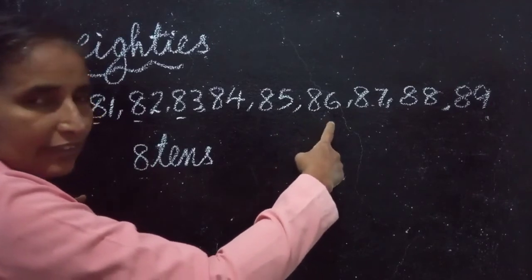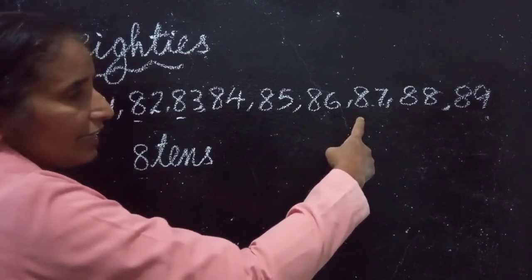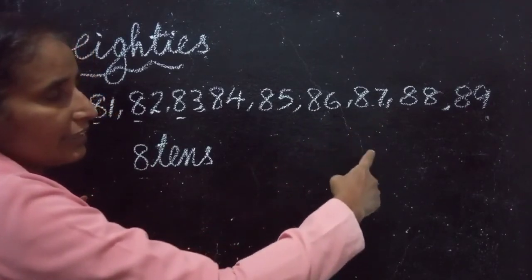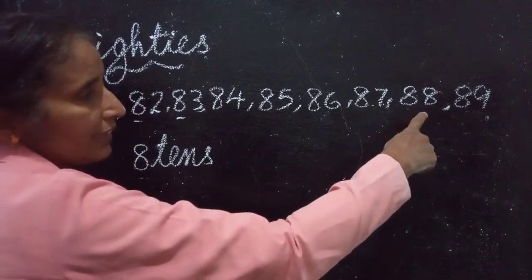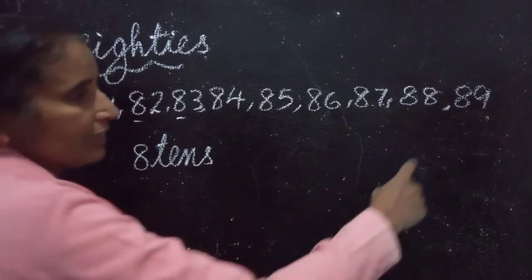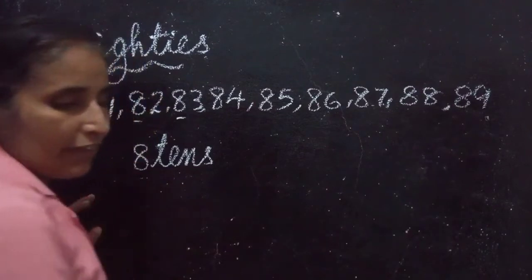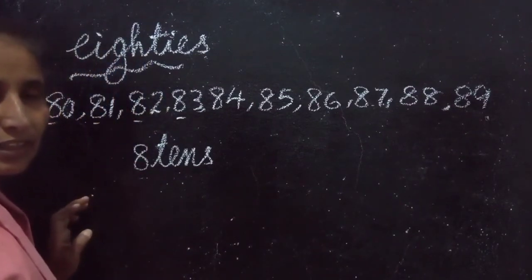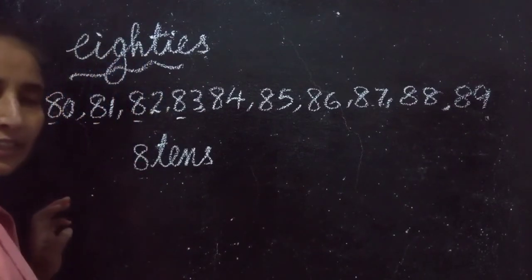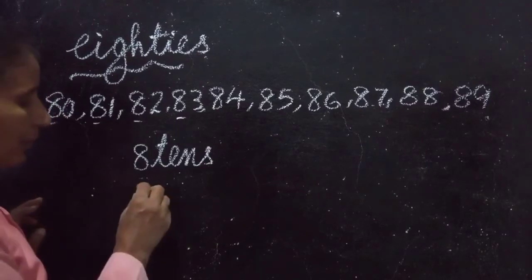8 tens and 6 ones are 86. 8 tens and 7 ones are 87. So let us learn the number name now.